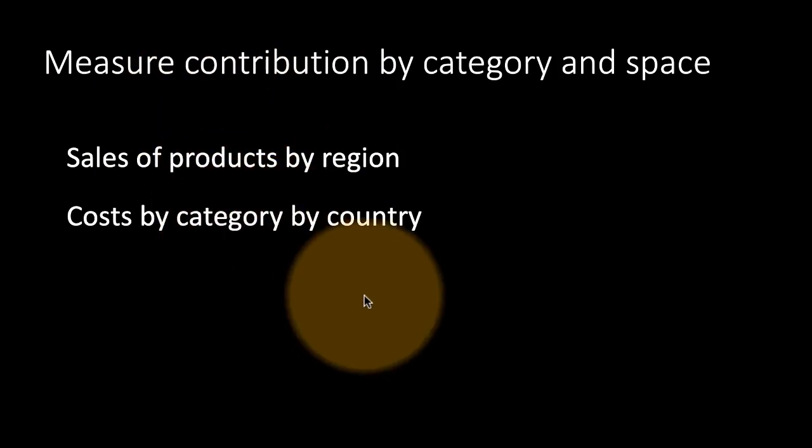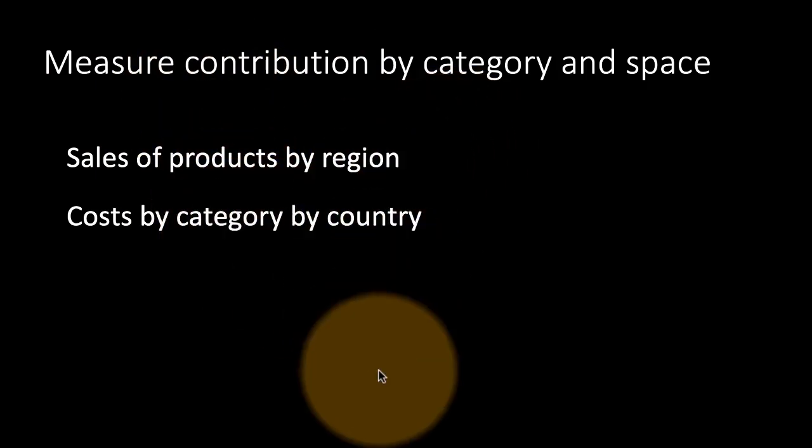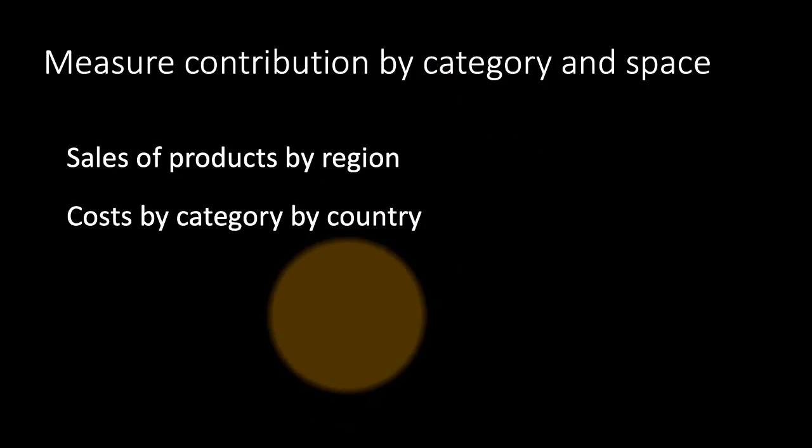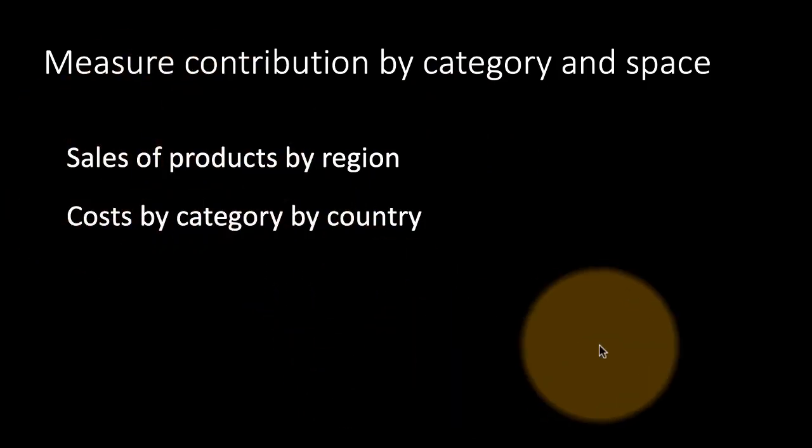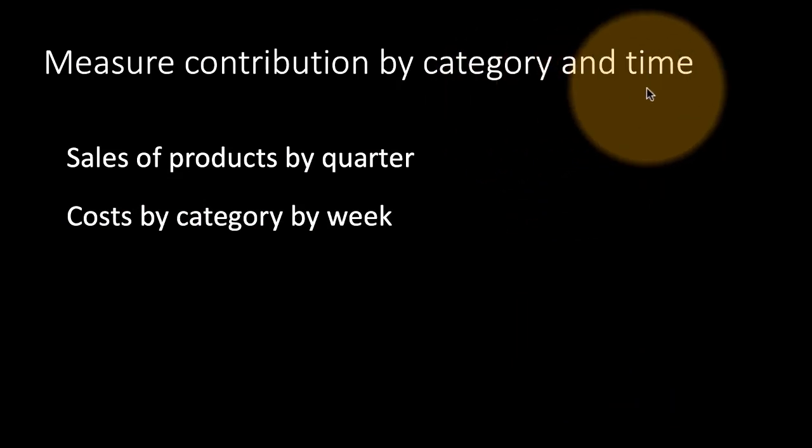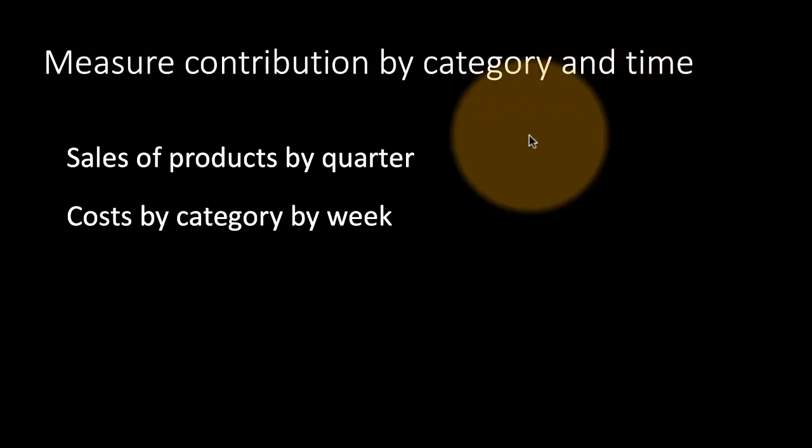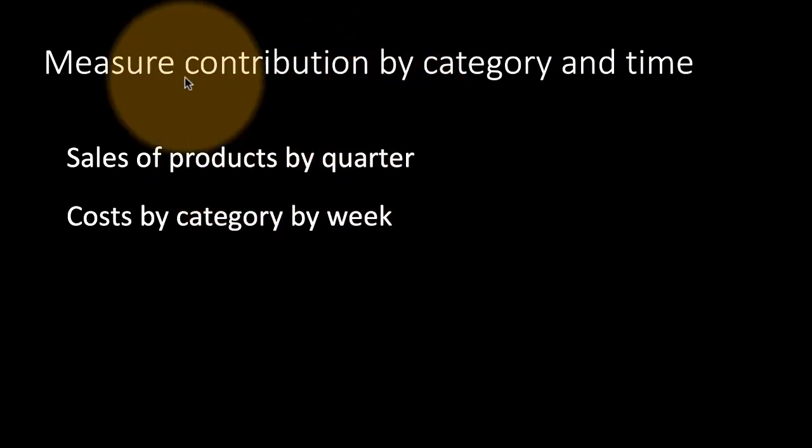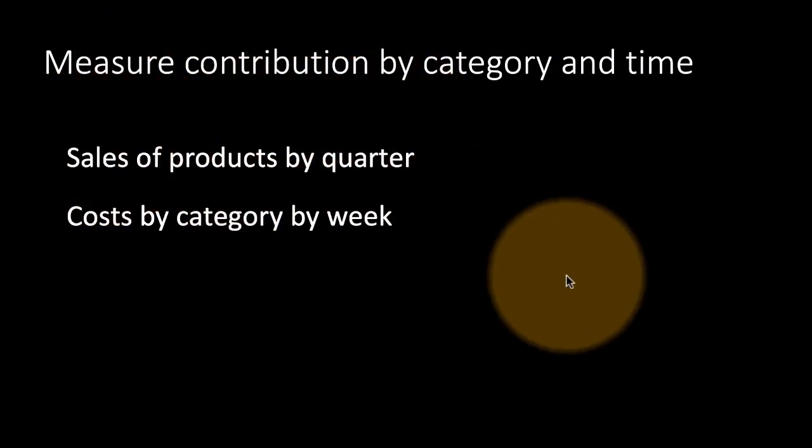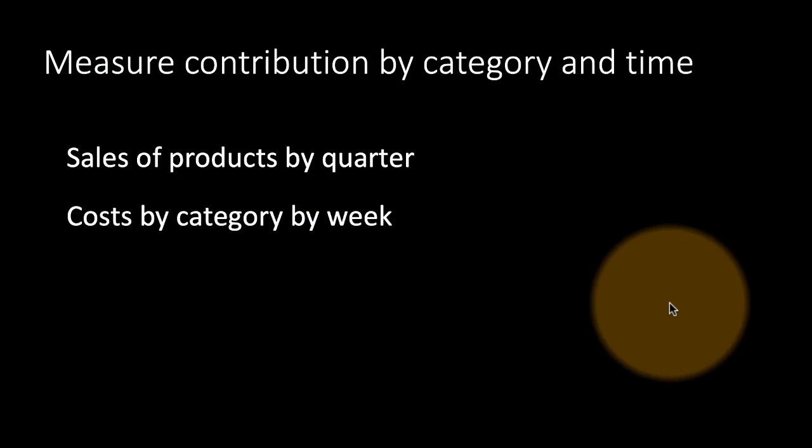And again, you can do the same thing over time. You take quarters or years or weeks and then you can look at sales of products by quarter, by year, by week. So here we are treating the time element as a category in this case and we are treating product also as a category. So there are two categories and one measure and we are combining it and doing analysis.